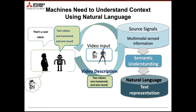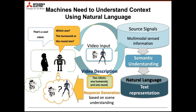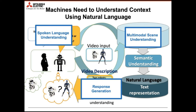That is video description. The system recognizes two robots — one is the humanoid type and the other is the land type. But still, that cannot respond to the human's input. The system needs to understand scenes and respond to the counterpart's speech. Which one — the humanoid or the land one? That question is better responded to. To build such a system, we need spoken language understanding, multimodal scene understanding, and response generation.